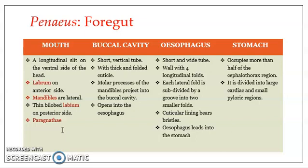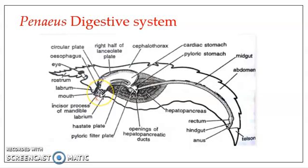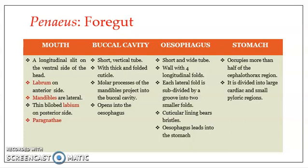The mouth opens into the buccal cavity, which is a very short vertical tube. The internal cuticular lining of the buccal cavity is thick but irregularly folded, and the molar process of the mandibles projects into the buccal cavity. The buccal cavity then opens into the esophagus.